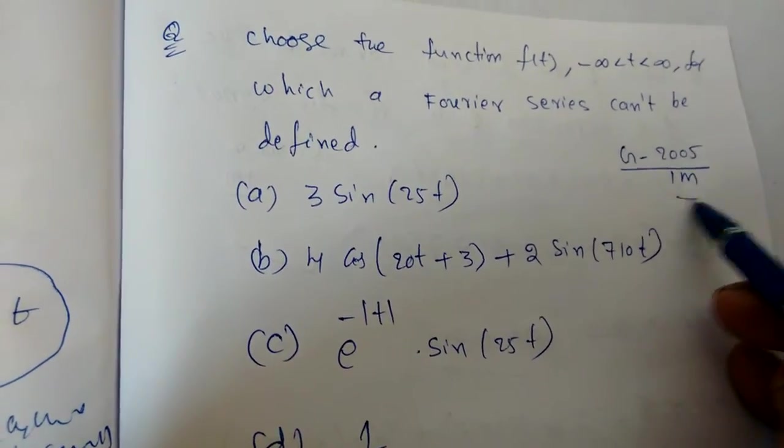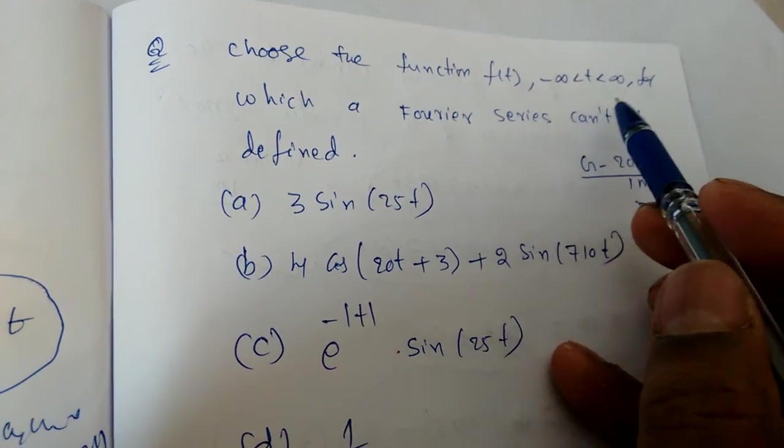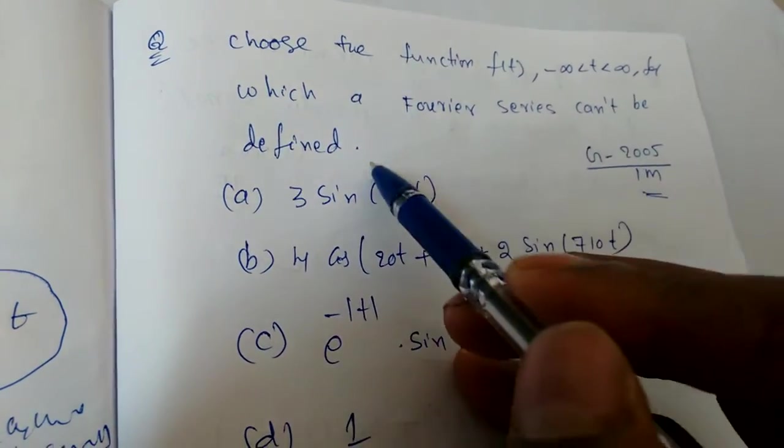Similarly, a similar type of problem came in GATE 2005 for one mark. Choose the function f of t, minus infinity to infinity, for which a Fourier series cannot be defined.